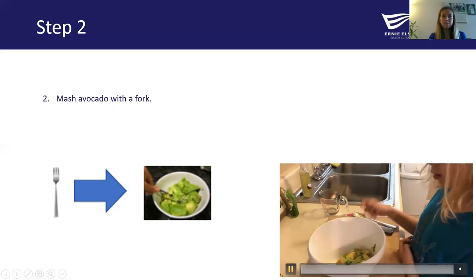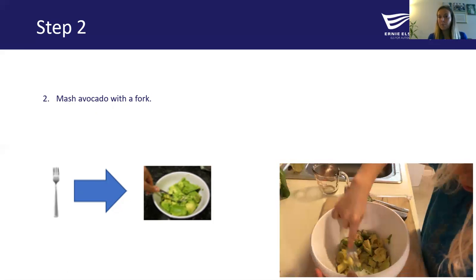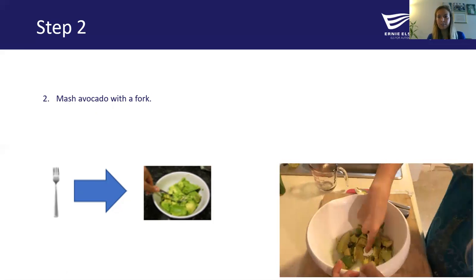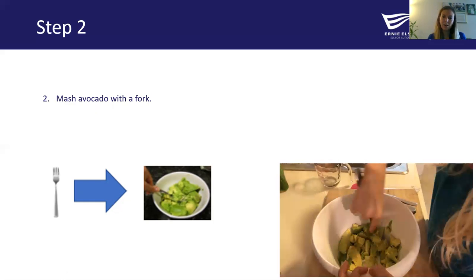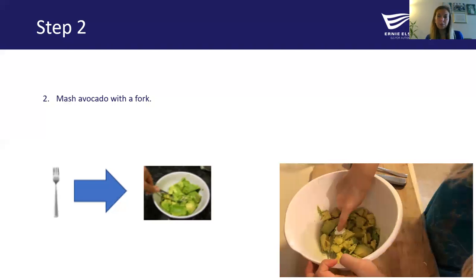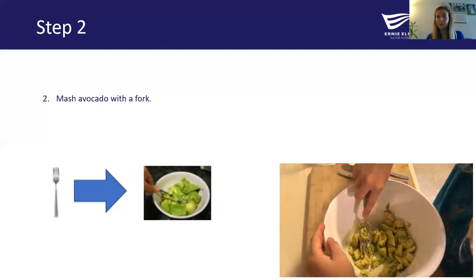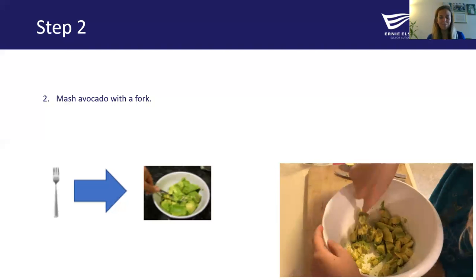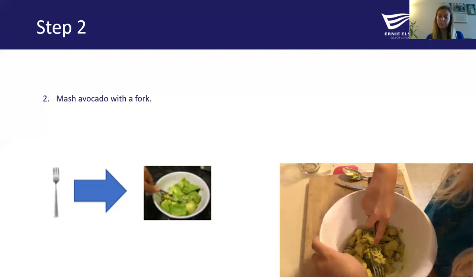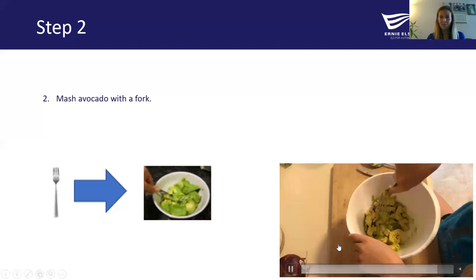Step two is to mash the avocado with a fork. We had a little bit of trouble with this — it's okay to let the avocado sit for a couple of minutes and soften. They also have different tools to make it a little bit easier. It did take us a little bit of time, and that was okay. This is also a preference: some people like really chunky guacamole, some people like really smooth. She's holding on to the bowl for support so it doesn't topple over as she works through getting all of the avocado nice and mashed.